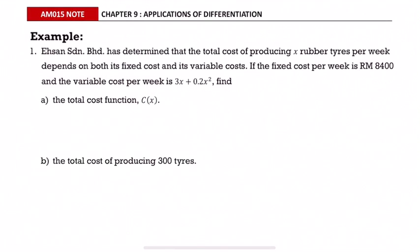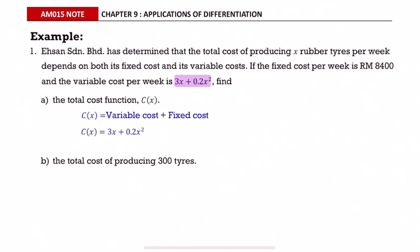Example one: AS Sendirian Berhad has determined that the total cost of producing x rubber tires per week depends on both its fixed cost and its variable cost. The fixed cost per week is RM 8,400 and the variable cost per week is 3x plus 0.2x squared. The total cost function equals variable cost plus fixed cost: 3x + 0.2x² + 8,400.